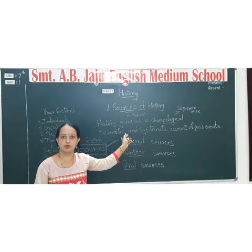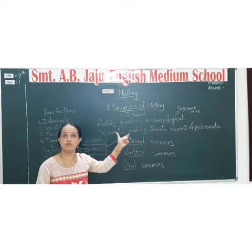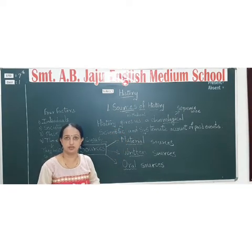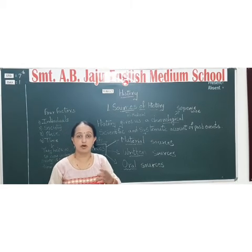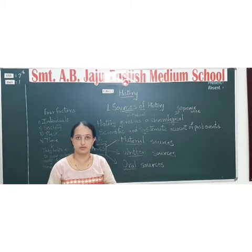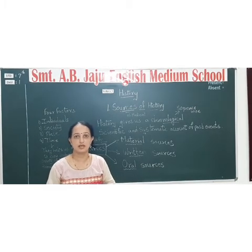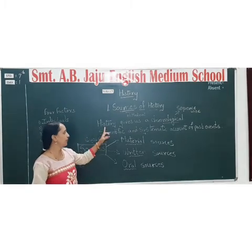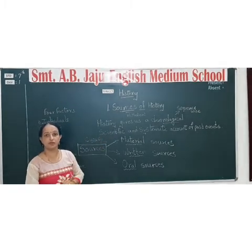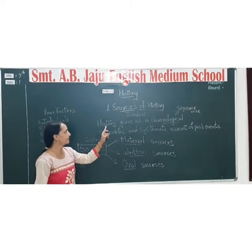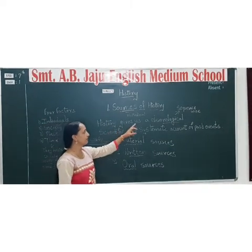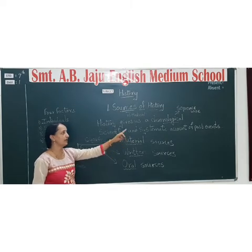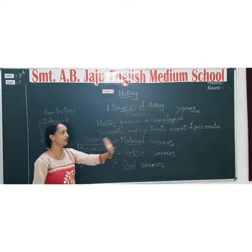Sources means what? A place from where we can get information about history. History is written on authentic proofs — events and proofs. First of all, we are going to see the definition of history. History gives us a chronological, scientific and systematic account of past events.